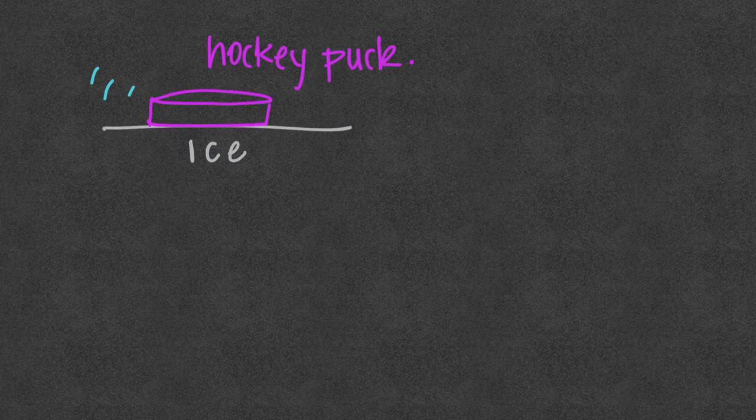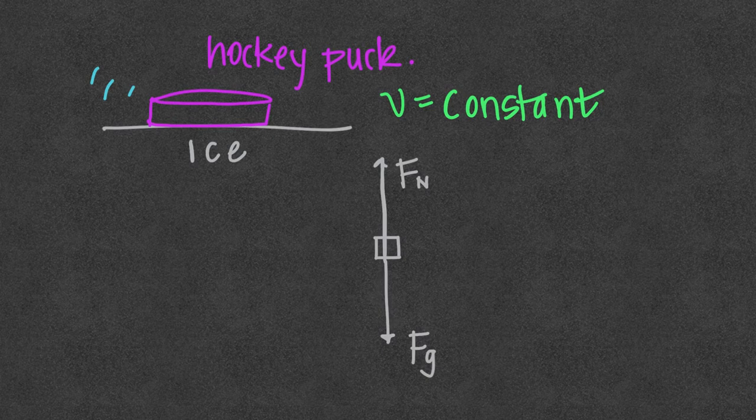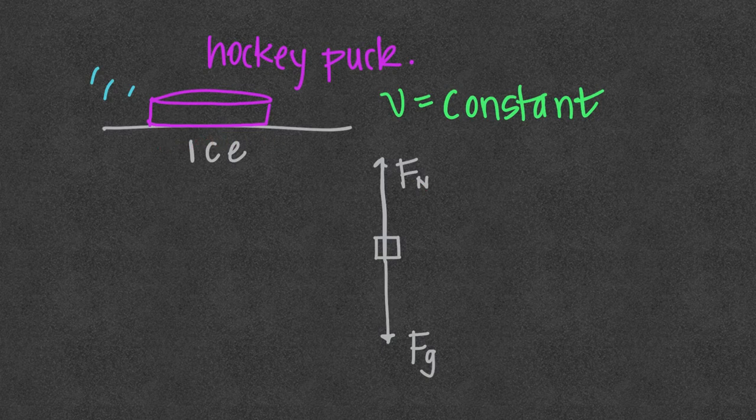In this case we have a hockey puck sitting on ice. The hockey puck is moving at a constant speed to the right so the free body diagram of all the forces acting on it would be a gravitational force down due to the earth pulling on it and a normal force up due to the ice surface.